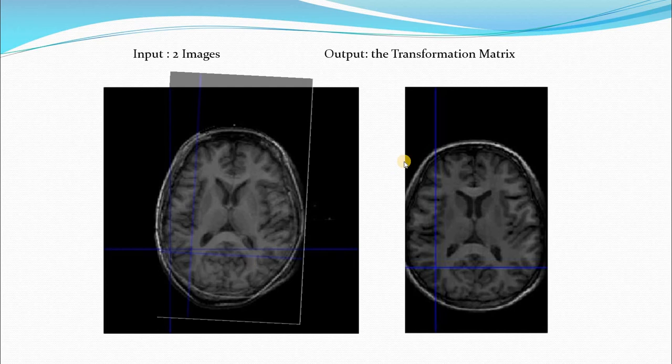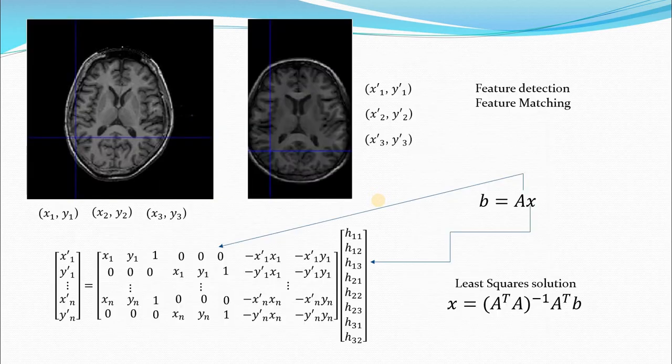So that is what we want. We want the transformation matrix to transform this image such that it becomes aligned with the other image. So that is what is image registration. Let us see how we can do that. For that what we need is these two images and we have to pick out points say x1 y1, x2 y2, x3 y3 such that they correspond to each other.